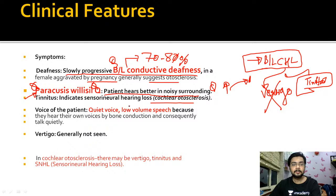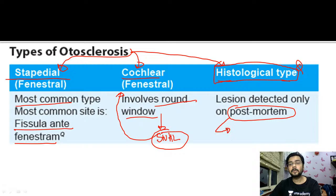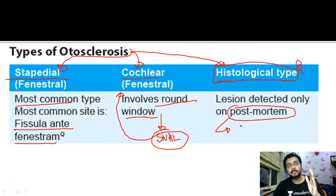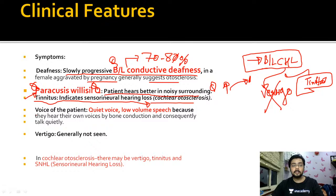Tinnitus is mainly an indication of sensorineural hearing loss, indicating cochlear otosclerosis. The histological type - as the name says - is diagnosed postmortem. You cannot make a diagnosis of histological otosclerosis while the patient is living. It is diagnosed once the patient dies and you do a histopathological section of the temporal bone. So it is a postmortem diagnosis, while the most common type remains stapedial otosclerosis.